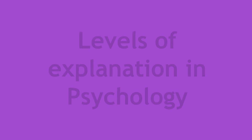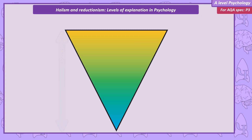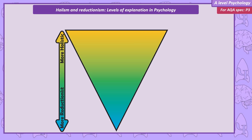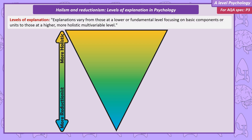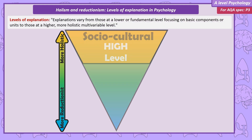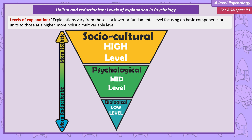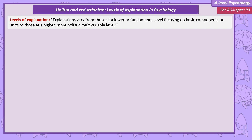To help you understand the distinction between holism and reductionism, it's going to be helpful to think about the concept of levels of explanation. We can be asked to define this term, and honestly, it's a little complex. If we just wanted to define levels of explanation, we could say: explanations vary from those at a lower or fundamental level, focusing on basic components or units, to those at a higher, more holistic, multivariable level.